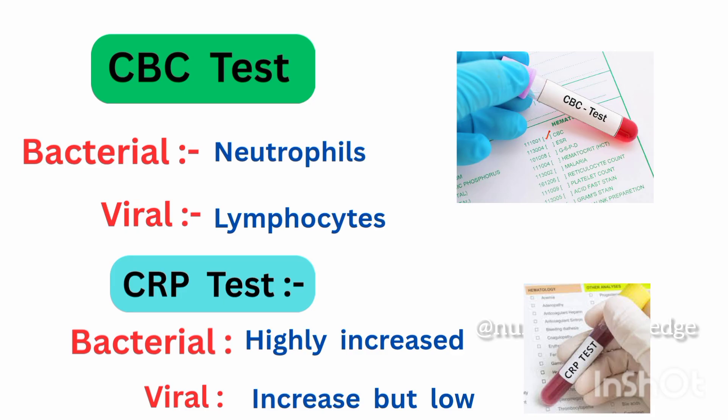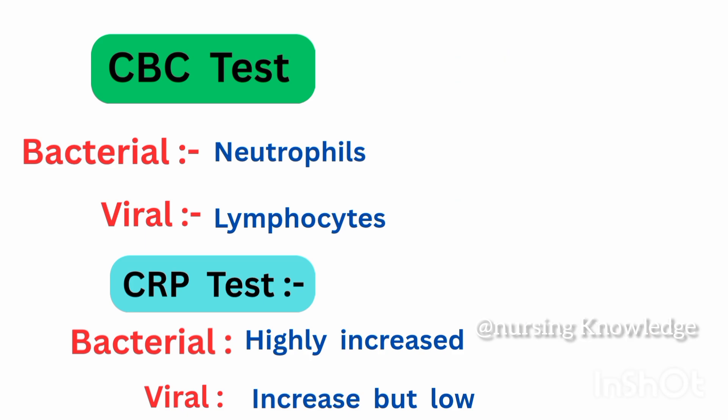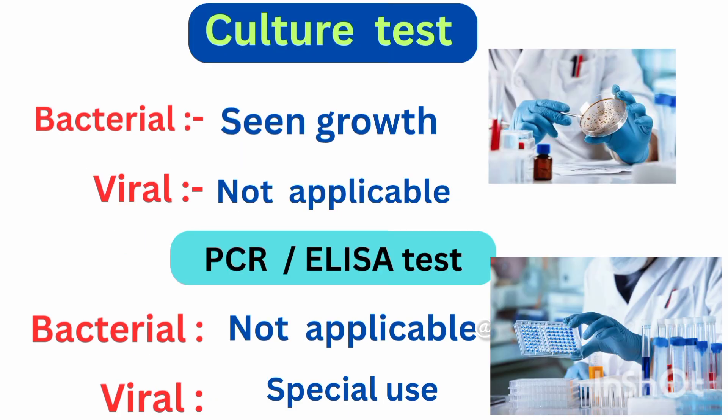CRP test: Bacterial infection shows a highly increased CRP, while viral infection shows an increased but lower CRP. Culture test: Bacterial infection shows growth, while it is not applicable for viral infection. PCR (Polymerase Chain Reaction) test: Not applicable for bacterial infection, but specifically used for viral infections.